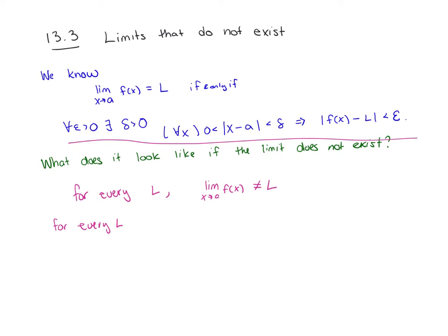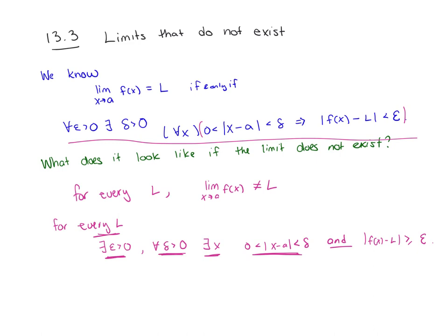So for every L there exists some epsilon greater than 0 such that for all delta greater than 0 there exists some x such that the absolute value of x minus A is between 0 and delta — since the negation of p implies q is p and not q — and f of x minus L is greater than or equal to epsilon. So no matter how small my delta is, I can find some x within delta of A such that f of x is really far away.